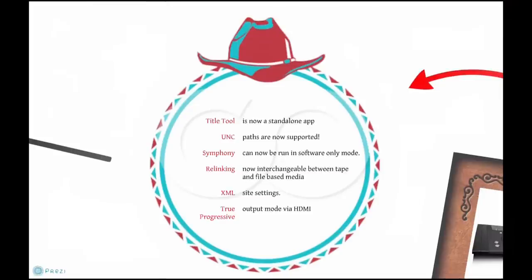Some other minor things that have changed: the Title Tool, which we went over, now launches as a separate application. Those moving projects between Mac and PC can now use UNC Paths, so relinking media is easy. Symphony can now be run in software-only mode. In the Relink menu you now have the ability to switch between tape and file-based media — very handy with AMA and tape-based workflows. When you save your project in Media Composer 6, it saves a little bit slower because site settings are being written to XML. The fact that Avid is adopting any kind of XML makes me happy. True progressive output via HDMI has also been rectified.